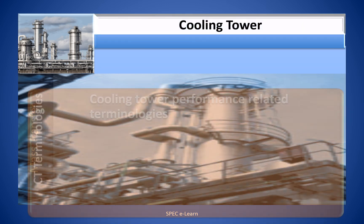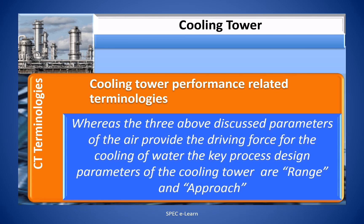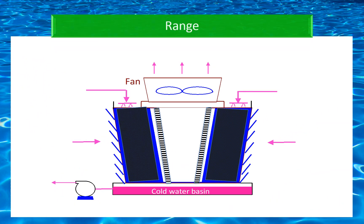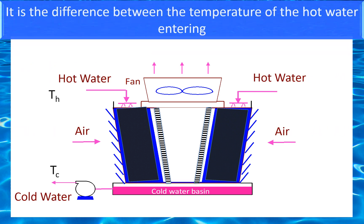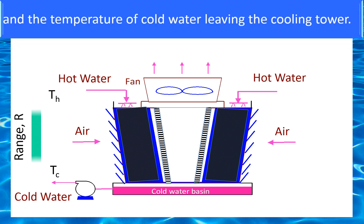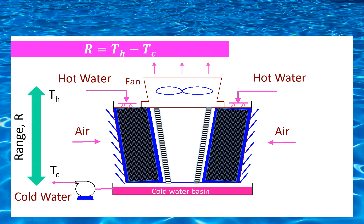Cooling tower performance related terminologies. The three air parameters provide the driving force for cooling of water. The key process design parameters are range and approach. Range is designated by the letter R — it is the difference between the temperature of hot water entering and the cold water leaving the cooling tower: R = TH − TC.